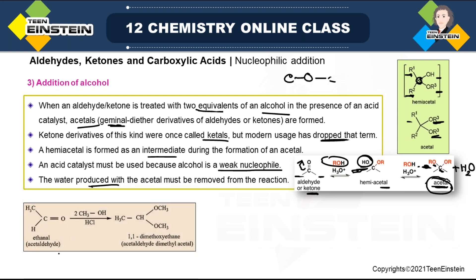Here is an example: we have taken CH₃CHO (acetaldehyde), HCl as acid catalyst, and two methanol molecules (1:2 ratio). The product obtained, comparing with the general acetal structure where R₁ = CH₃ and R₂ = H, with OR₃ = OCH₃, is known as acetaldehyde dimethyl acetal. The IUPAC name is 1,1-dimethoxyethane — two-carbon chain (ethane) with two methoxy groups at position 1. That is why it is named 1,1-dimethoxyethane.